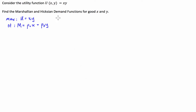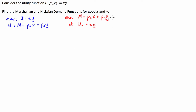For Hicksian demand, or the compensated demand, rather than maximising our utility function, we're trying to minimise the amount of money that we spend. So we're trying to minimise PX times X plus PY times Y, subject to a given utility — subject to U equals some fixed level. This is our Hicksian demand, or our compensated demand, and the other one is our Marshallian demand, or our uncompensated demand.